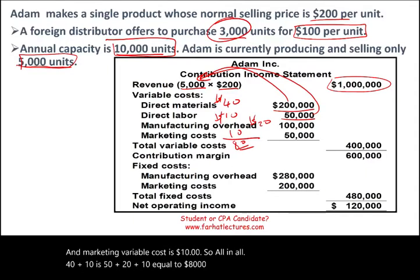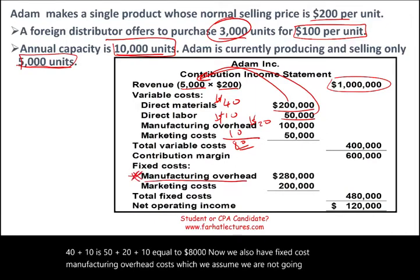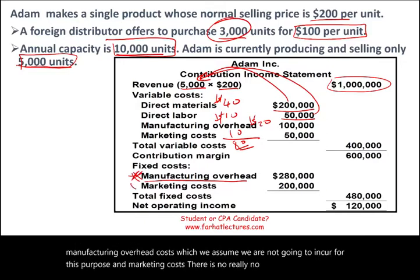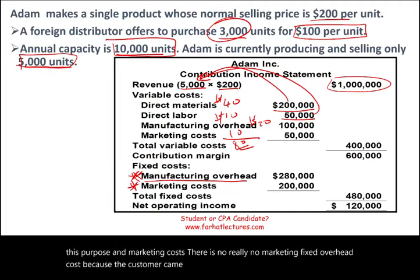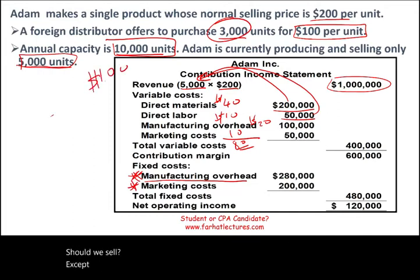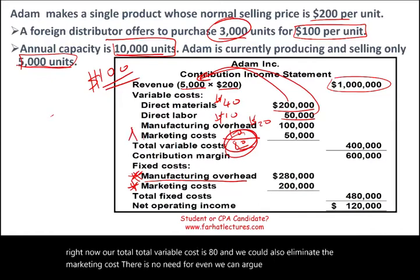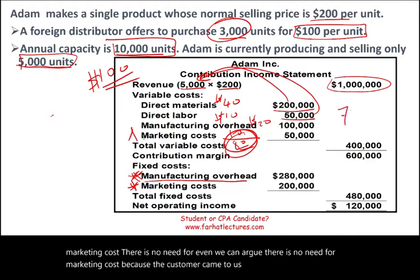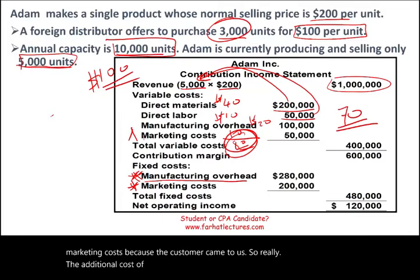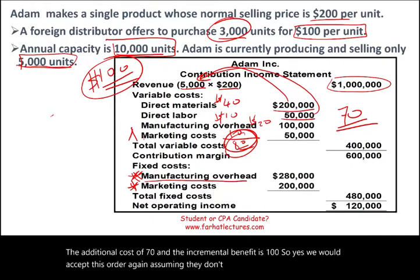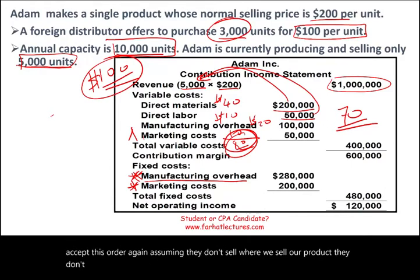We also have fixed manufacturing overhead cost, which we assume we are not going to incur for this purpose. And there's really no marketing fixed overhead cost because the customer came to us. Should we accept this $100 price? We should, because our total variable cost is $80, and we can also eliminate the marketing cost since the customer came to us. The additional cost is $70 and the incremental benefit is $100 — so yes, we accept this order, assuming they don't compete with our current distribution network.